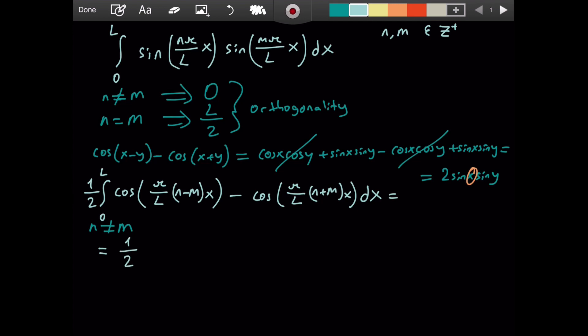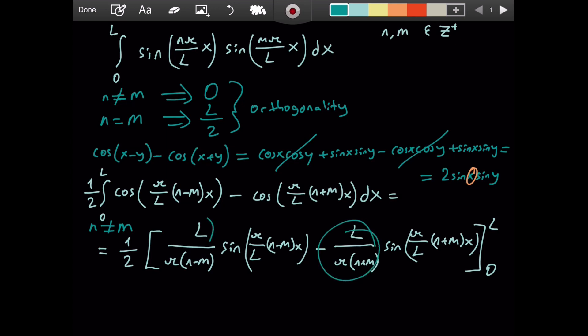We will have 1 over 2. Now, for the integral of cosine pi over L times n minus m times x, it will simply be, and you can check my math, it will be L over pi n minus m, then sine of pi over L, n minus m, x, then minus L over pi, n plus m, and this part. This factor and this factor, they are just there to account for the chain rule, the derivative of the inside.